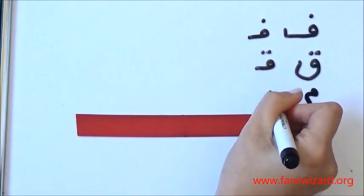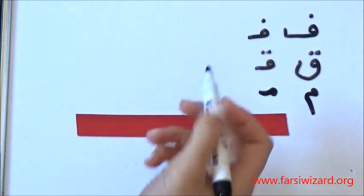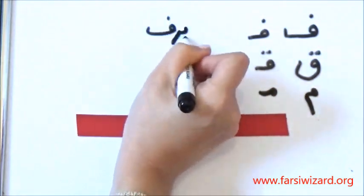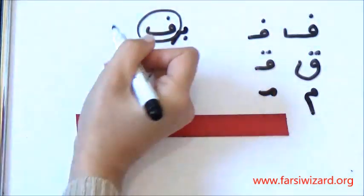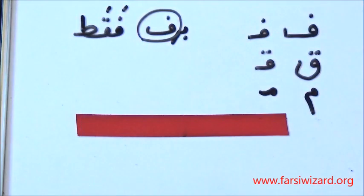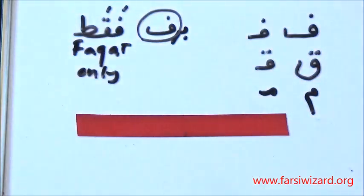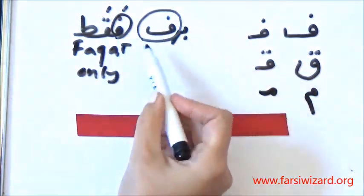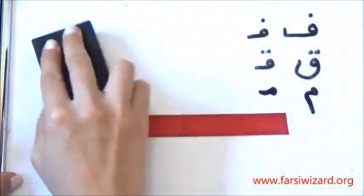Now we're going to deal with more examples. We're going to review the examples we had, and we're going to work on more examples. We had Barf. Here is the word Faqat. Faqat means only.